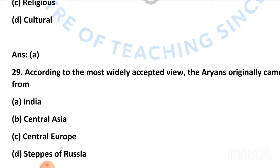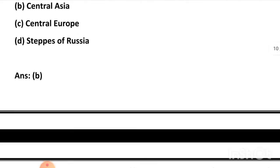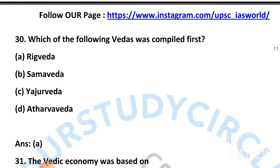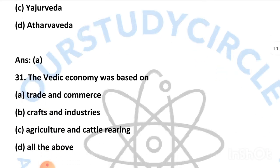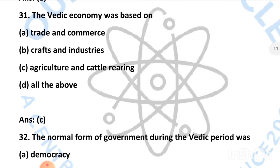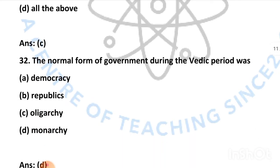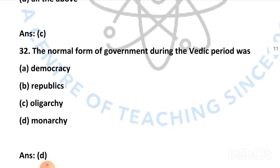Our next question is: according to the most widely accepted view, the Aryans originally came from — and the right answer is Central Asia. The next question is: which of the following Vedas was compiled first? — and the right answer is the Rig Veda. Our next question is: the Vedic economy was based on agriculture and cattle rearing.